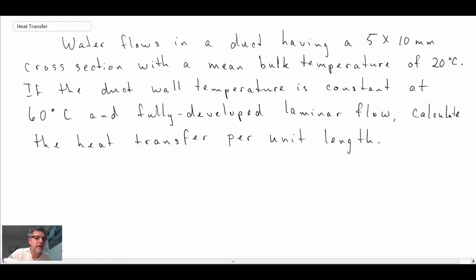Alright, so there is the problem statement. We're dealing with water flowing in a duct with a cross-section 5 by 10 millimeters with a mean bulk temperature of 20°C. The duct wall temperature is constant at 60°C and we're dealing with fully developed laminar flow. What we're looking for is to calculate the heat transfer per unit length.